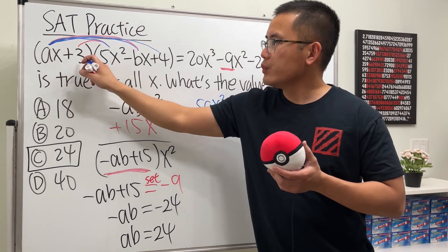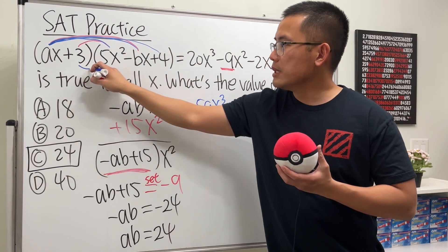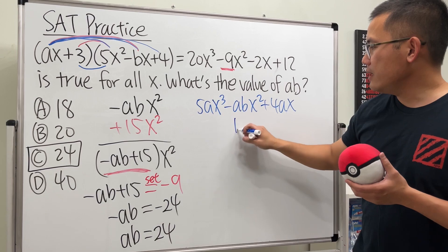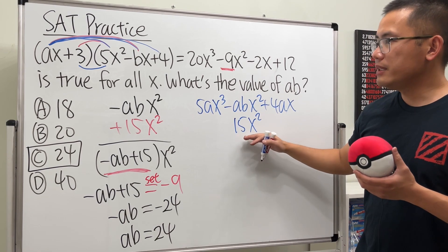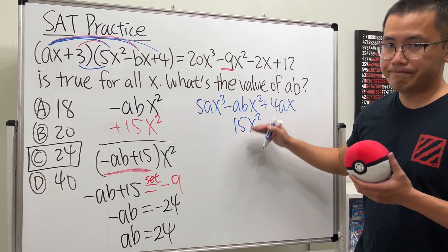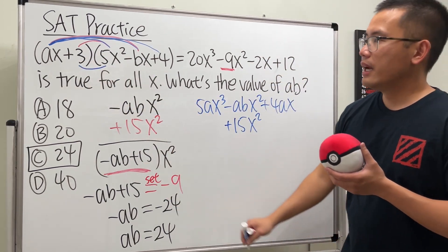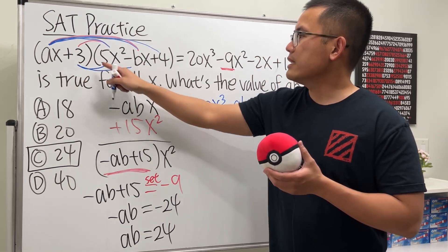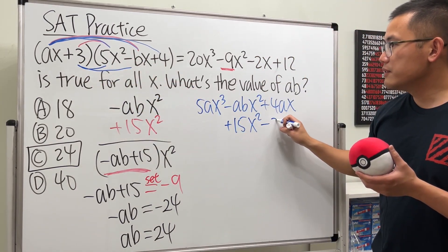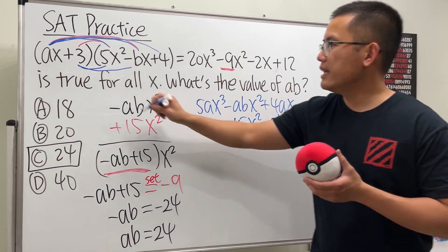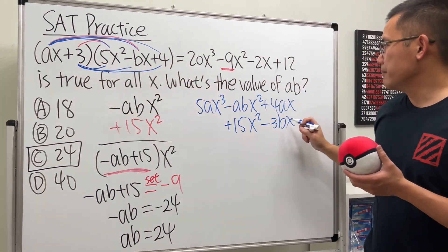We are done with the ax. We take this 3 now. We take this 3, multiply with that. We get 15x squared. And then, put it down here, because they both have the x squared term. Positive, positive. So, this is a plus. Continue. And then, this times that is going to be negative 3bx. And then, lastly, this times that is plus 12.